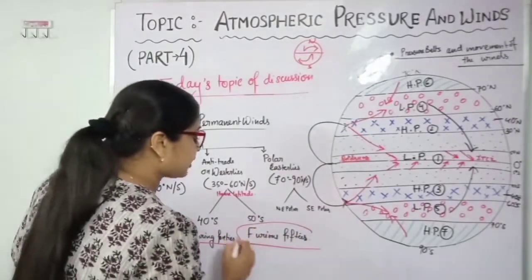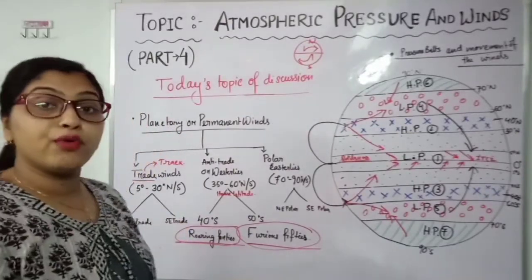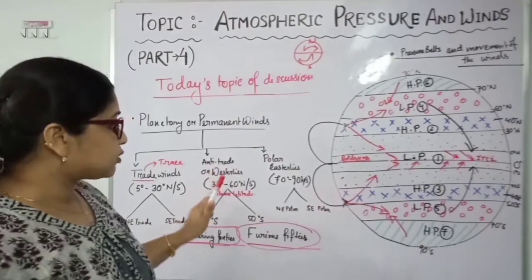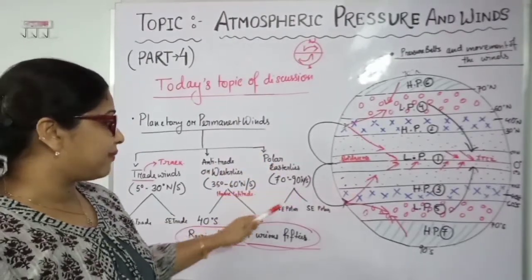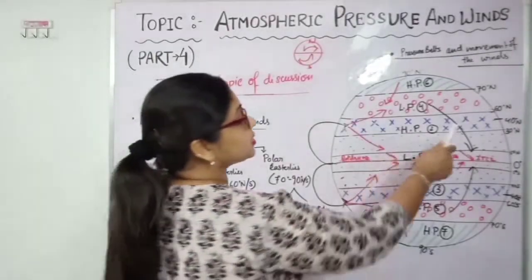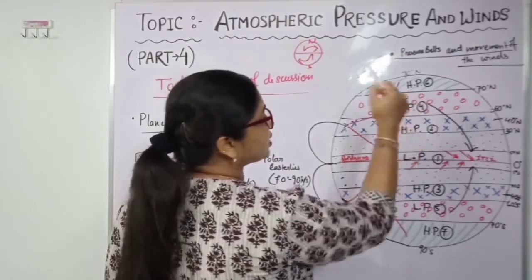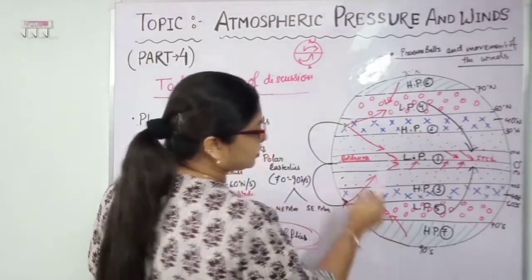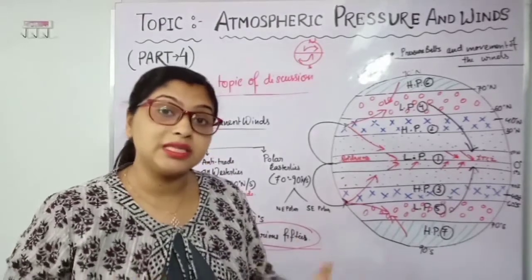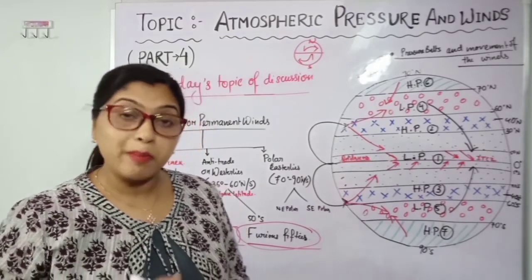Students, these two terms — roaring forties and furious fifties — used to come in the exam. One more important thing: when the westerly wind is blowing towards the low pressure area in the southern and northern hemisphere, due to that the Mediterranean sea area receives winter rainfall.